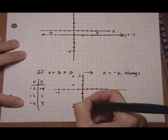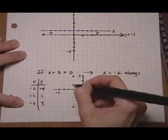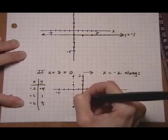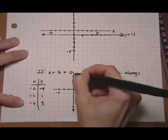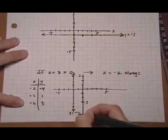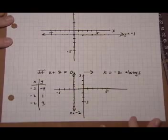And again, these would fill up. No matter what point I picked for y, x is always going to be minus 2. So in that case, I would get a vertical line.